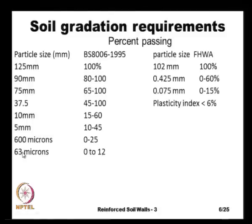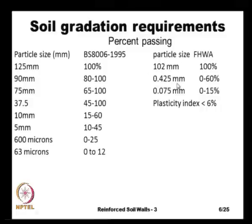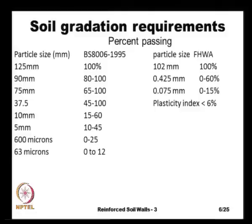In the BS code they use 63 microns as the standard rather than the 75 micron size used in Indian and American codes, and the percentage of fines allowed is only 12 percent. The Federal Highway Administration code has more or less the same gradation requirements at the top, but at the bottom end, at 0.425 mm (425 microns), up to 60 percent fines are allowed, and at 75 microns, 0 to 15 percent fines are allowed. The plasticity index allowed is less than 6 percent in both the BS code and the American code.